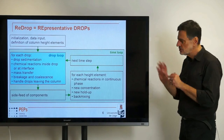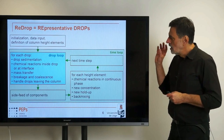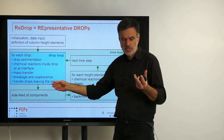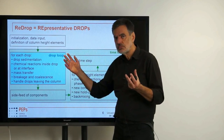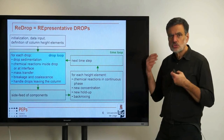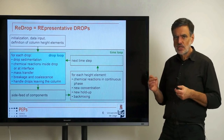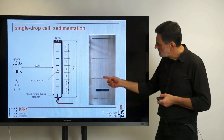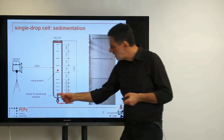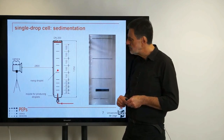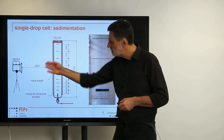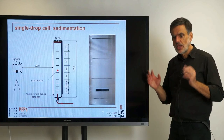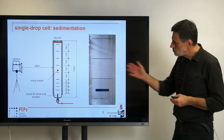We need to have models that describe all these individual effects for the drops: sedimentation, mass transfer, breaking and coalescence, and the interactions between many drops and between the drops and the internals of the column. In order to derive such models, we have devised dedicated lab-scale experiments with which we can really measure how the drops behave. One simple cell is the sedimentation cell. A drop is produced with a nozzle connected to a computer-driven syringe, so we know the volume of the drop. We see how it rises, evaluate that from a video, and characterize the sedimentation velocity as a function of drop diameter and intensity of mass transfer.